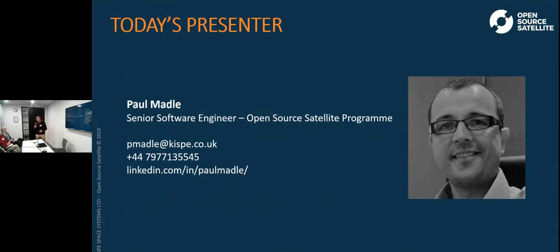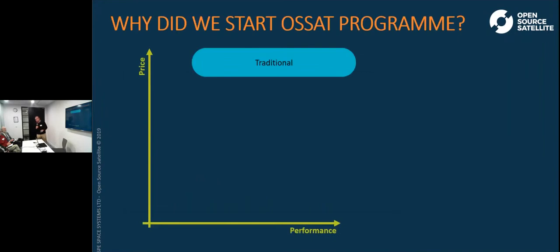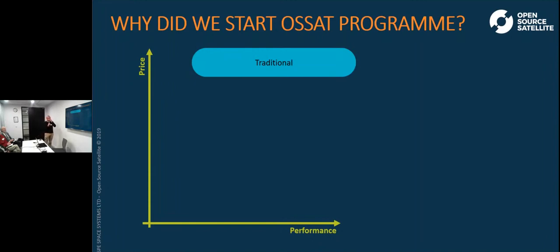But our kind of heart and soul and why we exist is this open source satellite program. So what is it and how has it come about? Over the years there's been the traditional sort of space industry that produces spacecraft and satellites that are quite expensive and quite big. The reason they're quite big and quite expensive is because they use tried and tested technologies that they know are going to work, but they tend to be about 20 years out of date in terms of modern technology. So in order to get something that's performant and make good things happen in space, you've got to make something quite big and therefore quite expensive and very expensive to launch.